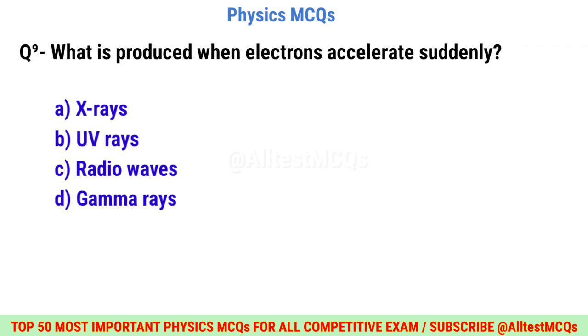Question number nine: What is produced when electrons accelerate suddenly? Right option is A: X-rays.